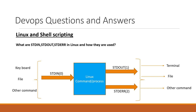These are data transfer streams used to transfer text data. When we execute a Linux command or a process, these streams are attached to that process. The text data will be given to the command via the standard input stream, and the output of the command or process will be fed to the outputs via the stdout and stderr streams.